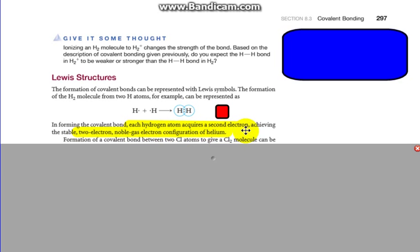In forming the covalent bond, each hydrogen atom acquires a second electron, achieving the stable two-electron noble gas configuration like helium. Helium is the only one that has two electrons in its stable state.